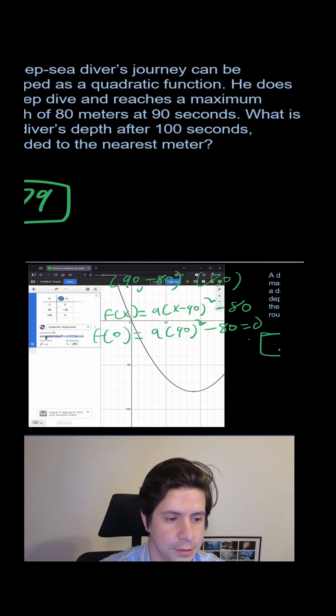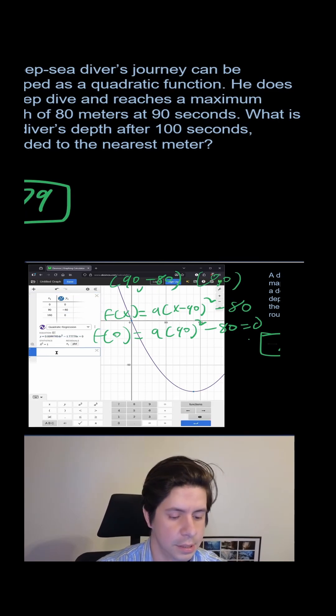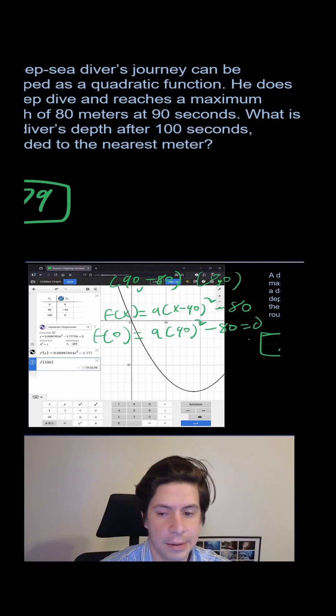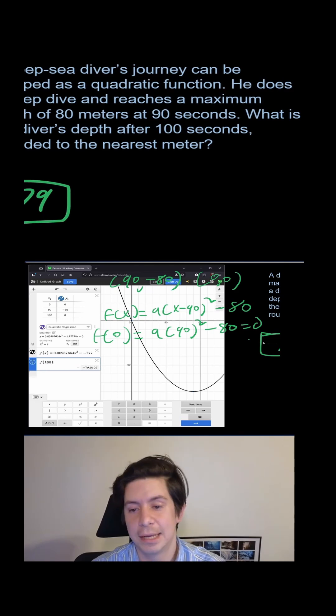We could take that value, copy it, and then put that here. Make it equal to f of x. And then do f of 100. And we get the same thing, negative 79.01, which is negative 79.